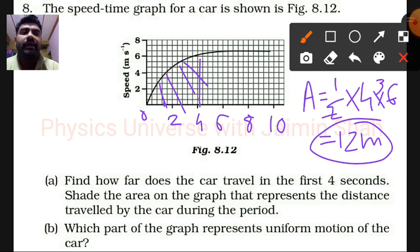Then, which part of the graph represents uniform motion of the car? After 6 seconds